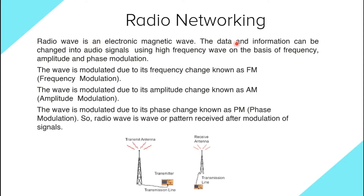Radio networking uses electromagnetic waves. Data and information can be changed into audio signals using high frequency waves. The wave is modulated based on frequency, amplitude, and phase. A wave modulated due to its frequency change is known as FM (Frequency Modulation); a wave modulated due to its amplitude change is known as AM (Amplitude Modulation); and a wave modulated due to its phase change is known as PM (Phase Modulation). In radio networking, a transmitting antenna sends radio waves and a receiving antenna receives the data and outputs it in digital format.